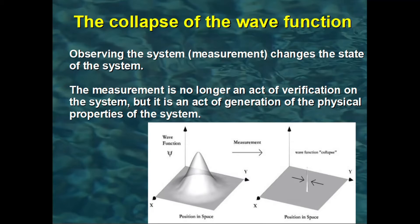For example, in the left figure, the initial wave function represents a delocalized state of the quantum. Assuming we carry out a measurement of its position and find the quantum in a certain position, then its wave function must localize to that point, because the probability of finding the particle at that point has become 100%, while it is zero elsewhere.